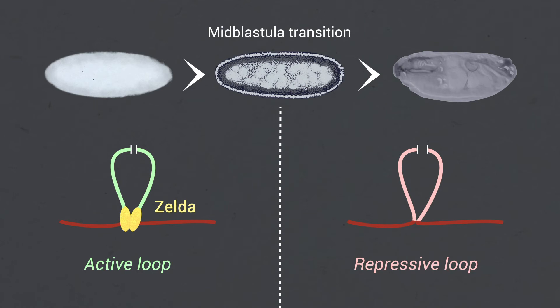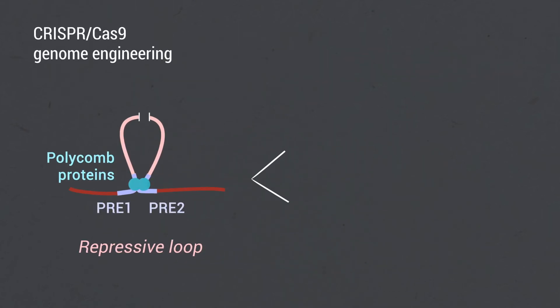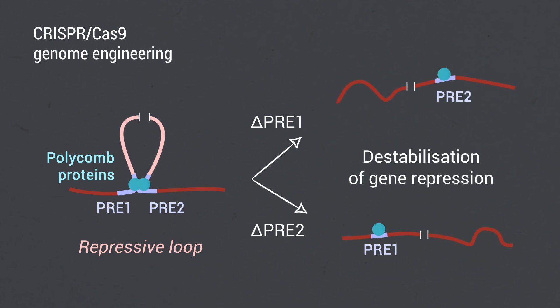Zelda-dependent active loops are formed before the mid-blastula transition between transcribed genes over long distances. Repressive loops within polycomb domains are formed after the mid-blastula transition between PREs by the action of the transcription factor GAGA and polycomb proteins. Perturbation of PRE function by CRISPR-Cas9 genome engineering affects polycomb domain formation and destabilizes polycomb-mediated silencing.